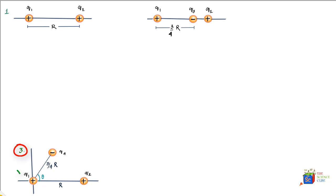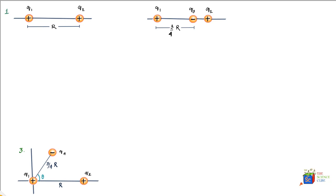The third case is the toughest, where you have charge q1 and you are expected to find the force on q1 on account of q2 and q4, which is at an angle theta from the horizontal — at an angle of 60 degrees — and it is negatively charged. The level of difficulty increases as you move from problem 1 to 3.